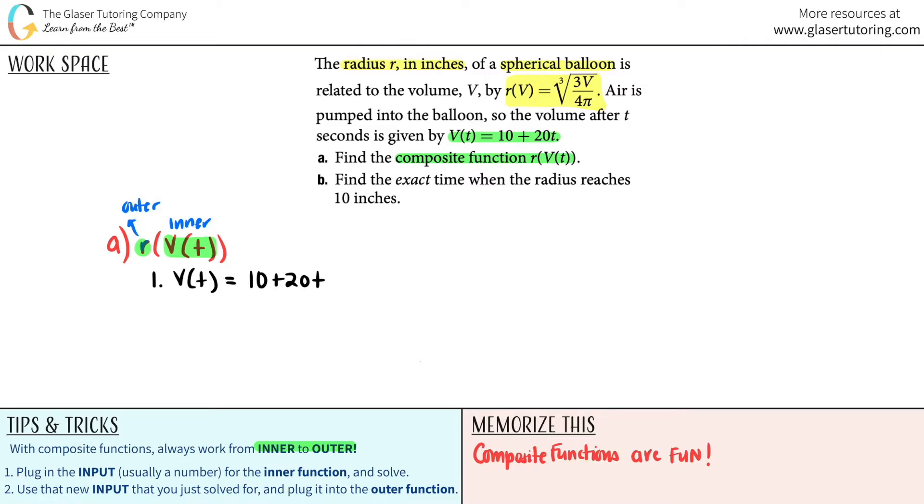Now we will use that answer, that's our new input that we just solved for, and plug it in for the outer function. So for number two, we're now doing r of V of t. But what was V of t equal to? It was this.